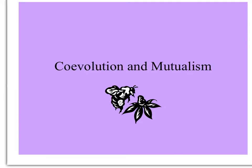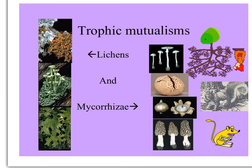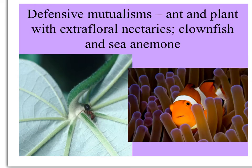A favorite topic of mine: co-evolution and mutualism. The earliest described mutualisms were trophic mutualisms, where two species live together helping each other survive where neither could alone, like lichens and mycorrhizal fungi. But mutualisms can also be defensive, such as those that involve ants visiting plants with extra-floral nectaries and protecting them against herbivores, or the clownfish living inside sea anemones, which protect them from predators.